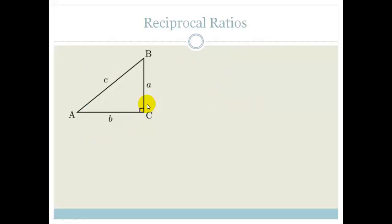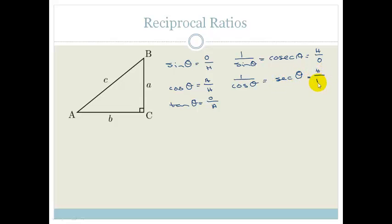Now, your reciprocal ratios. Sine theta is opposite over hypotenuse, cos theta is adjacent over hypotenuse, and tan theta is opposite over adjacent. The reciprocals are inverses. One over sine theta is called cosecant theta, which equals hypotenuse over opposite. One over cos theta is secant theta, which is hypotenuse over adjacent. And one over tan theta is cotangent theta, which is adjacent over opposite. These are your reciprocals, and you need to know them.